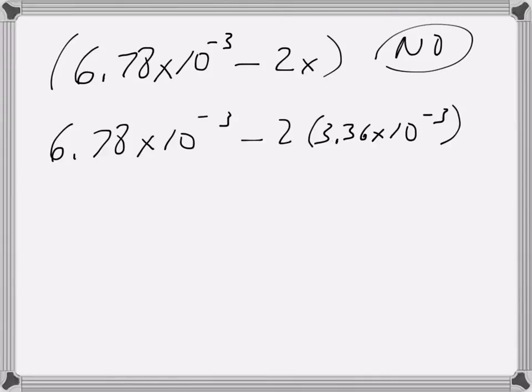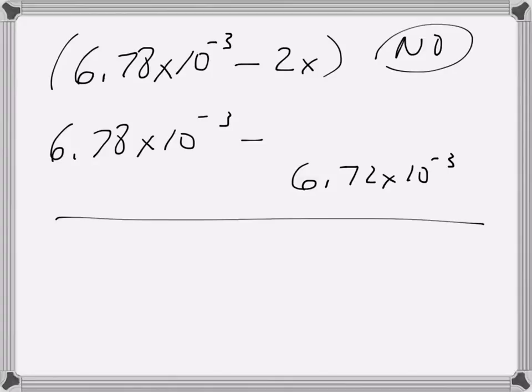When I times that out, 2 times 3.36 times 10 to the negative third, I get that I'm going to subtract 6.72 times 10 to the negative third from the original amount. So I'm going to do that math. When I do that, I'm going to get a really small number. Basically, I get that the nitrogen concentration at equilibrium is 6.0 times 10 to the negative fifth.